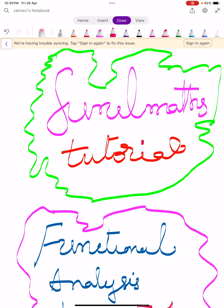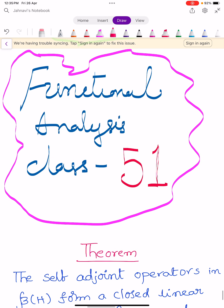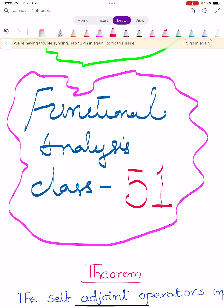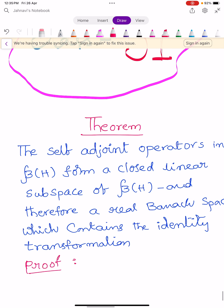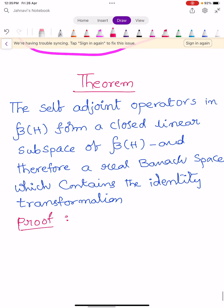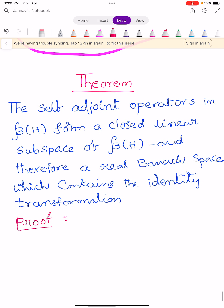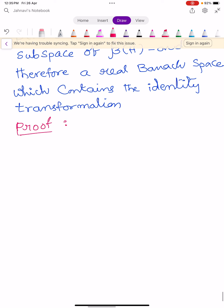Hi, welcome to Sunil Maths tutorial functional analysis class number 51. In this video, we prove a theorem. Let us see the statement of the theorem: the self-adjoint operators in B(H) form a closed linear subspace of B(H), and therefore a real Banach space which contains the identity transformation.